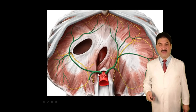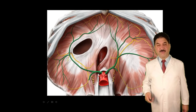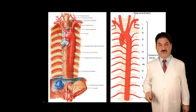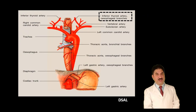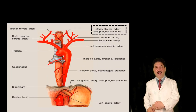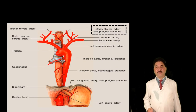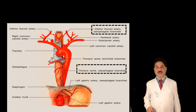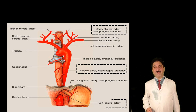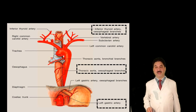In this diagram we can see various branches of the descending thoracic aorta, which include bronchial, esophageal, intercostal, superior phrenic, pericardial, and subcostal arteries. Regarding blood supply of the esophagus: the upper one-third is supplied by the inferior thyroid artery; the middle one-third receives blood supply from esophageal branches of the descending thoracic aorta; and the lower one-third receives blood supply through the left gastric artery, which is a branch of the abdominal aorta.